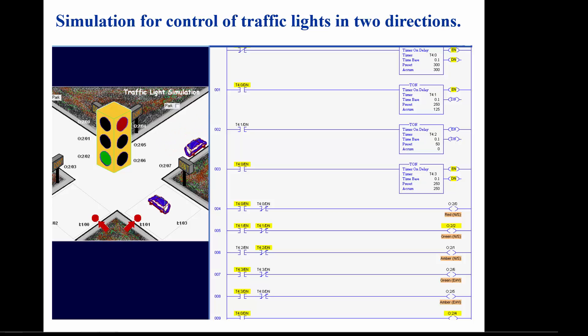At this step, T4:0 and T4:3 timers have completed timing. The done bit of T4:0 has started timer T4:1. The north-south green light is on and the east-west red light is on. Timer T4:1 has finished timing and started timer T4:2, which turns off the north-south green light and turns on the north-south amber light.